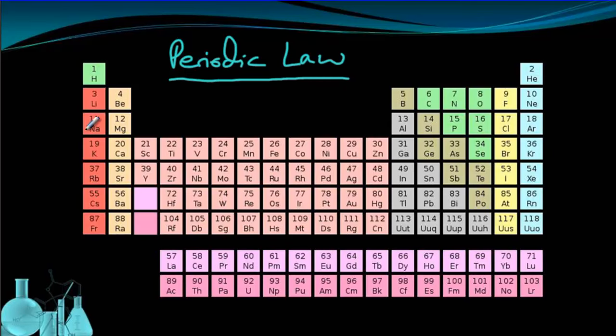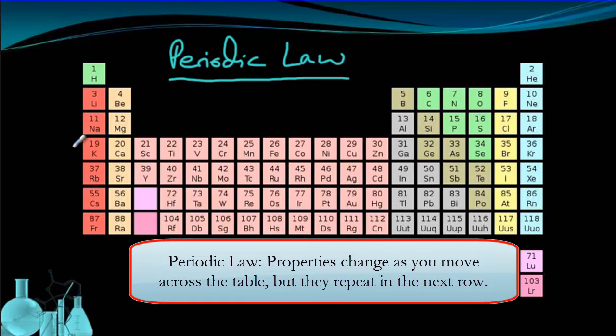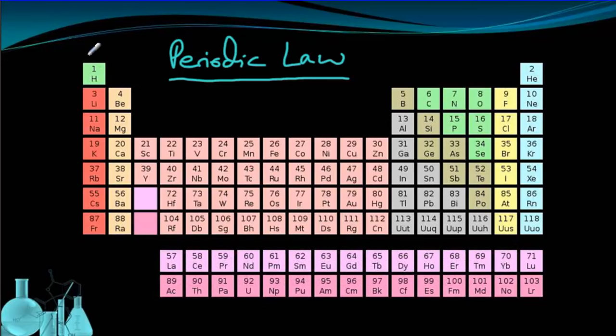Periodic law says that properties change as you move across the table, but that they repeat on the next row. This periodic law is the major cornerstone for how this table is laid out and why it's laid out the way it is.